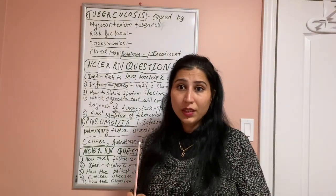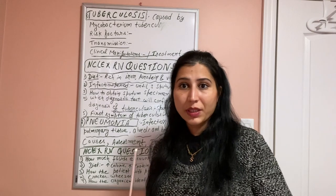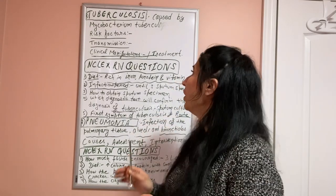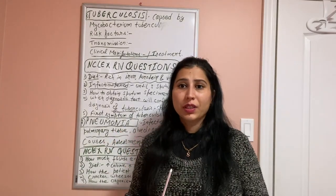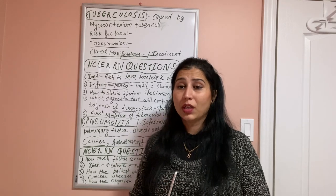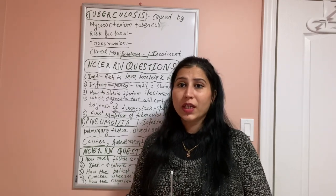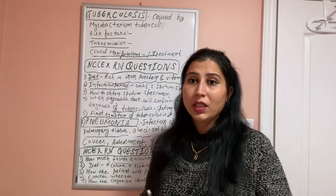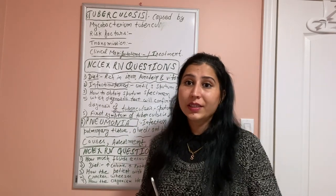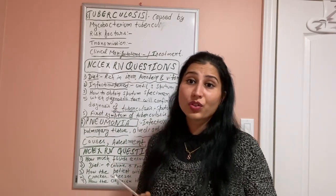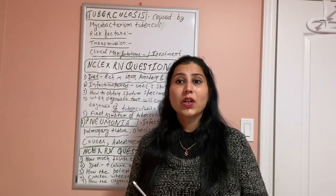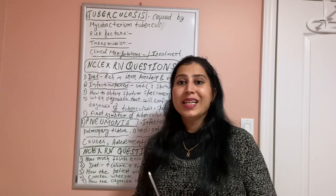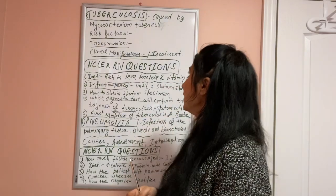To summarize tuberculosis: it's a bacterial infection caused by Mycobacterium tuberculosis. It mainly affects people who are immunocompromised — those with AIDS, HIV, weak lungs, elderly people, people living in lower socioeconomic groups, or people living in crowded places or moving from one place to another. These people are easily affected by this disease condition.